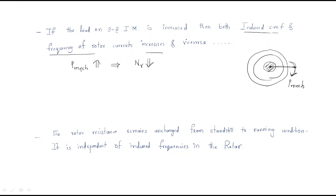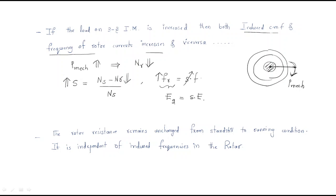The relation between slip and speed is: slip = (Ns - Nr) / Ns. When speed decreases, the slip increases. Whenever slip increases, rotor frequency equals slip times stator frequency. So when slip increases, rotor frequency automatically increases. Similarly, induced EMF E2 equals slip times induced EMF at standstill, so when slip increases, induced EMF also increases.